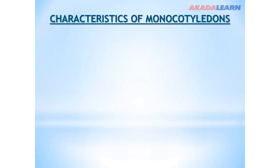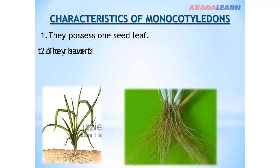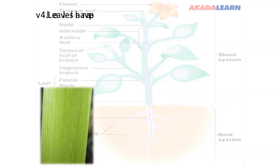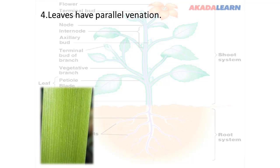Characteristics of monocotyledons: they possess one seed leaf. They have a fibrous root system. The leaves are long and narrow. The leaves have parallel venation — if you look at the leaf from the side, you will see straight lines on it, and those straight lines are known as leaf venation. For monocotyledons, it has parallel leaf venation.